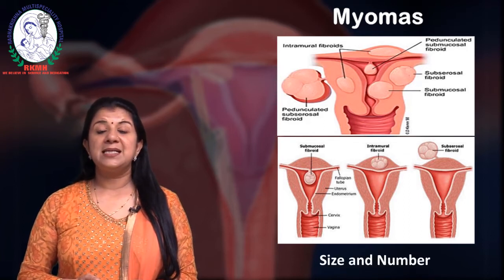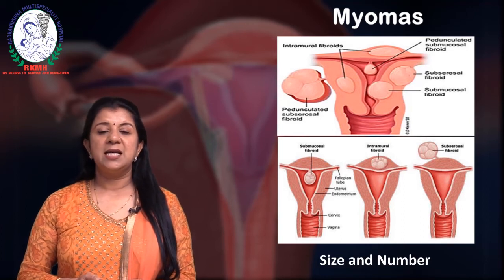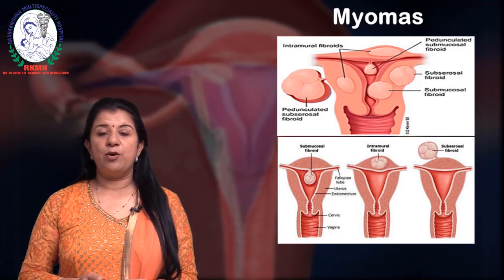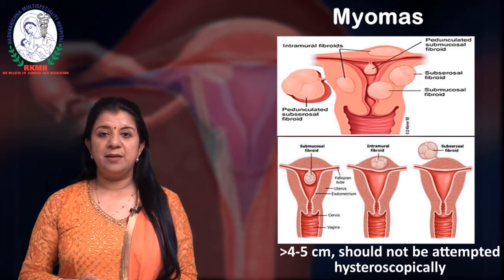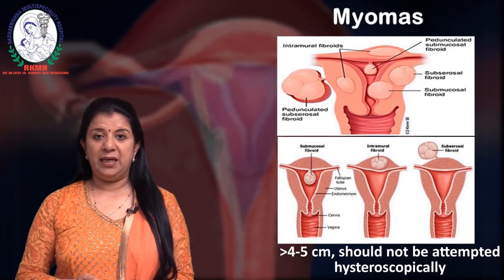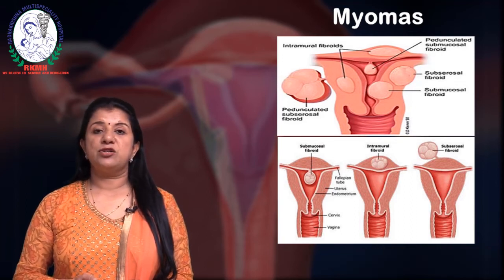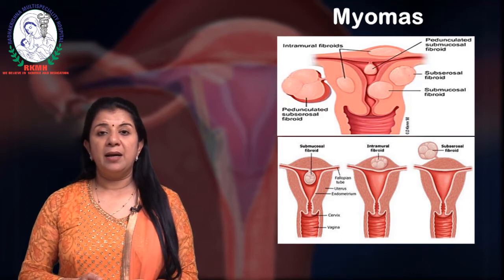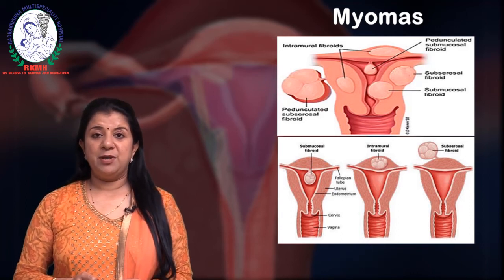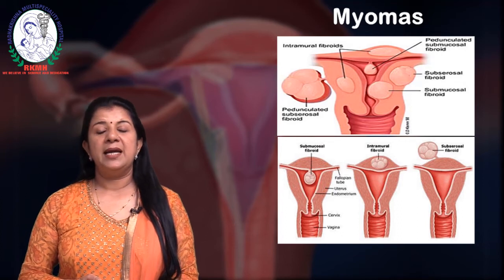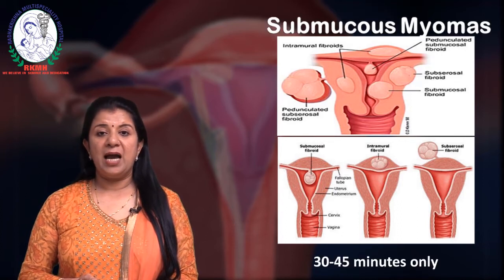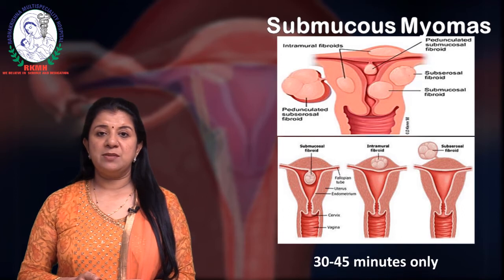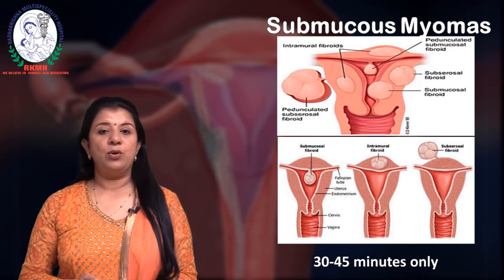What is the size and number? Number depends on how much is inside the uterine cavity, but size is very important. Myomas larger than 4 to 5 centimeters should not be attempted hysteroscopically, because any hysteroscopic myomectomy should be finished within half an hour. The complications post-myomectomy can be grave, so we have to finish submucous myomectomies within 30 to 45 minutes.